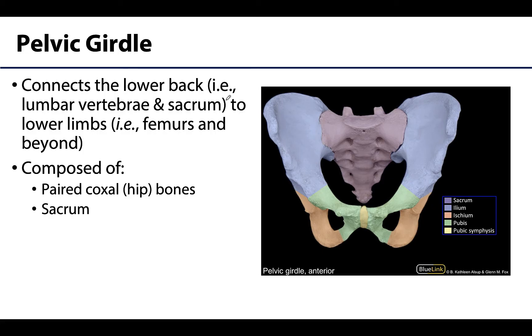The pelvic girdle is the means by which the lower back is going to connect with the lower limbs, and this area is important in terms of locomotion as well as maintaining upright posture.